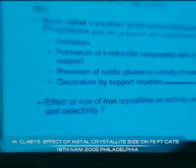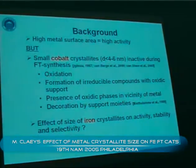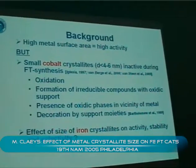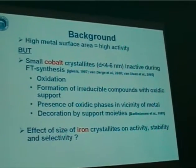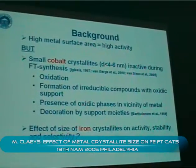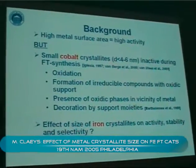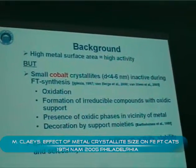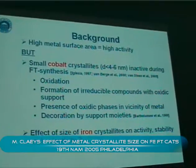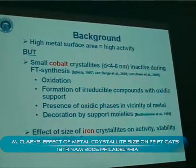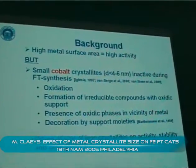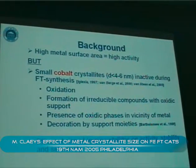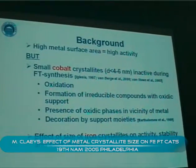The background of course being that in order to obtain high activity, we want to provide a high metal surface area, and this you can achieve by using small crystallites. However, it has been reported — and we've seen this this morning — that small cobalt crystallites smaller than 4 to 6 nanometers are inactive during Fischer-Tropsch synthesis. There are a couple of explanations: oxidation, formation of irreducible compounds with the oxidic support material, even the presence of oxidic phases in the vicinity of the metal, and decoration by support moieties have been mentioned as reasons.